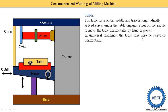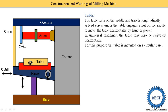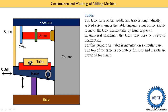In universal machines, the table may also be swiveled horizontally, meaning it moves at certain angles. For this purpose the table is mounted on a circular base — between the saddle and table there is a circular base provided for swiveling. In some machines it cannot swivel, so the circular base is not provided.